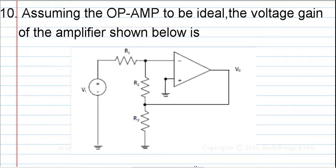The question is, assuming the op-amp to be ideal, the voltage gain of the amplifier shown below is